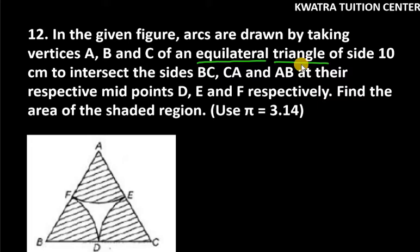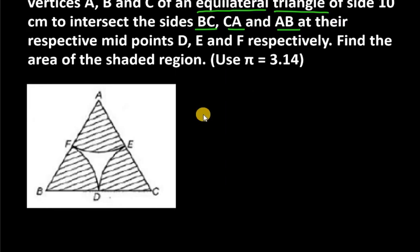To intersect the sides BC, CA, and AB at their respective midpoints D, E, and F respectively. Find the area of the shaded region. So we basically need to find this area.